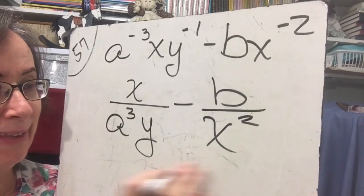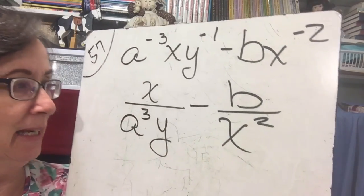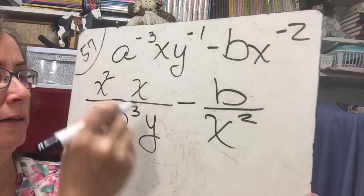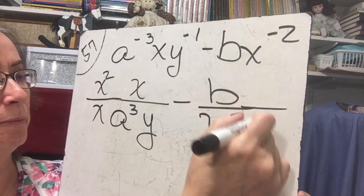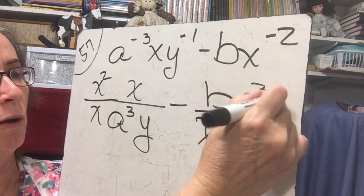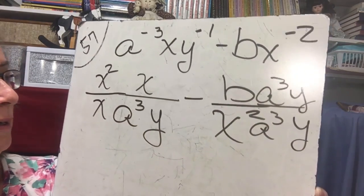Now, I don't have anything in common but I need to multiply by x squared over x squared multiply this side by a cubed over a cubed and y over y. So I made a boo-boo there that should have been an x squared.